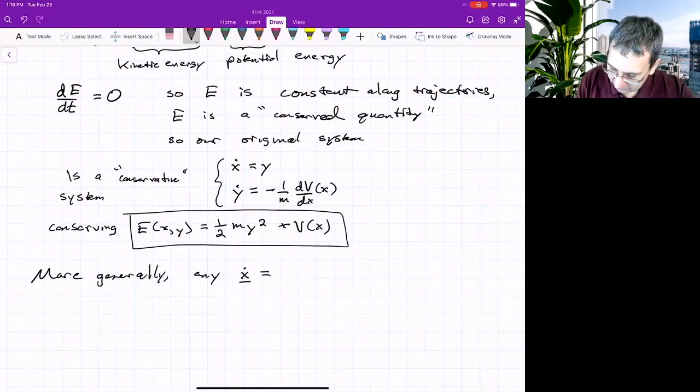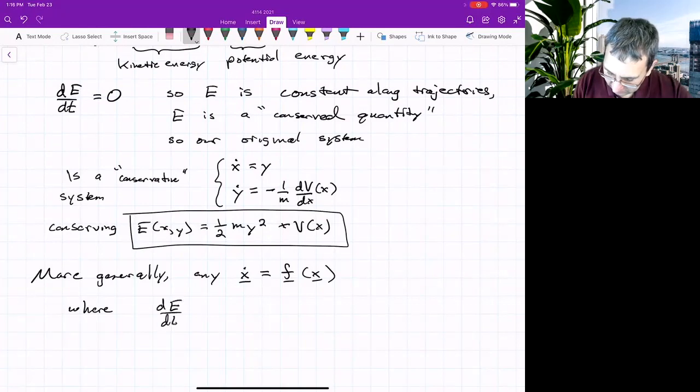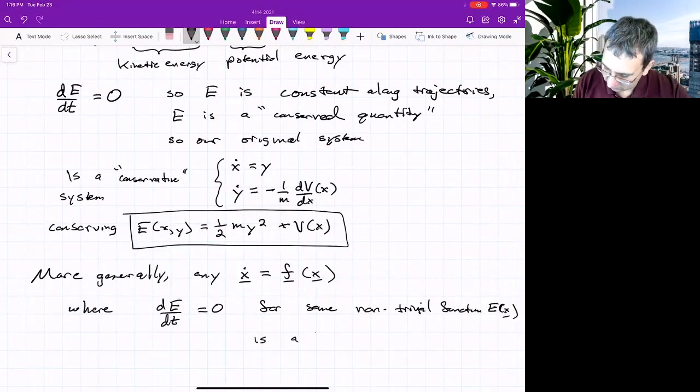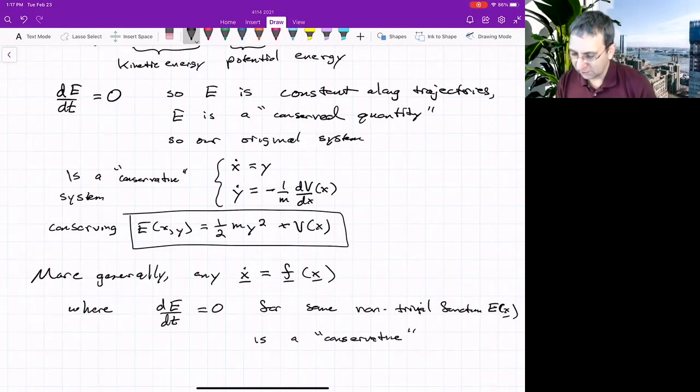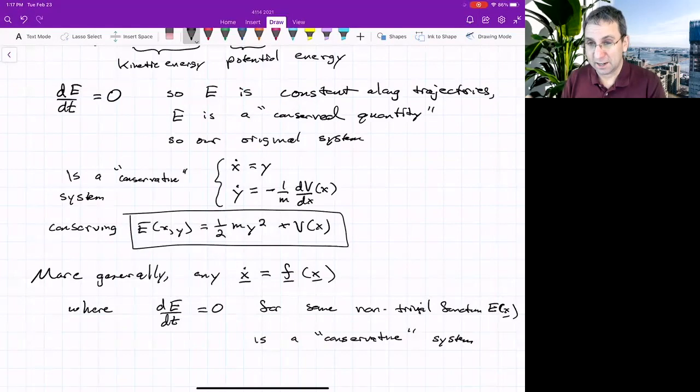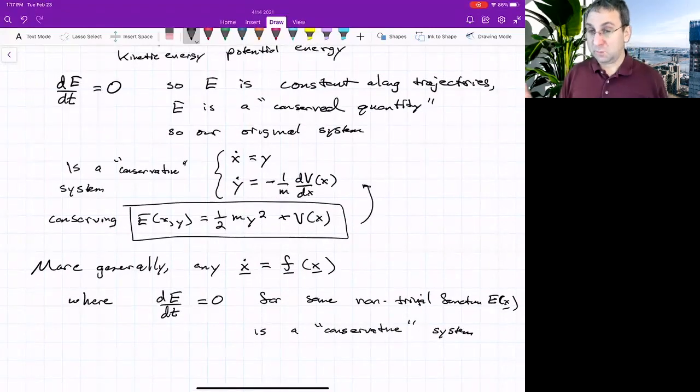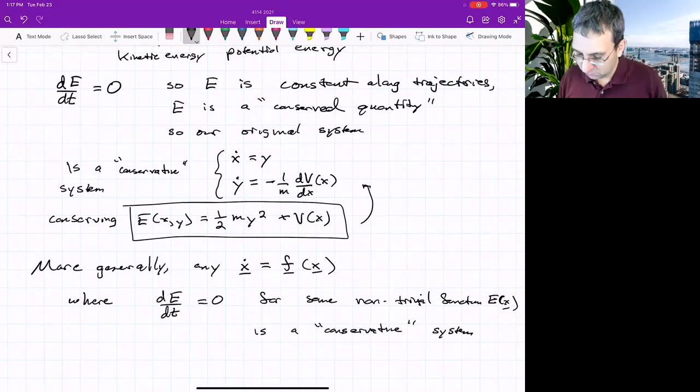First, let's back up and we could say something about more general idea of a conservative system. So more generally, any system that's of this form, and we're just thinking 2d, where dE by dt equals 0 for some, and maybe I'll throw in non-trivial function, e is a conservative system. So in a larger sense, if you have a system that conserves some scalar function of your dynamical variables, then we could say that's a conservative system, even if it doesn't come from mechanics. So you have to be careful when someone says, oh, this is a conservative system, or this is a conservative force. You need to ask them specifically, what are they talking about? So up here, I was thinking of, I know the specific form for e, it's always going to be this, but you could have situations where this function e is something else.